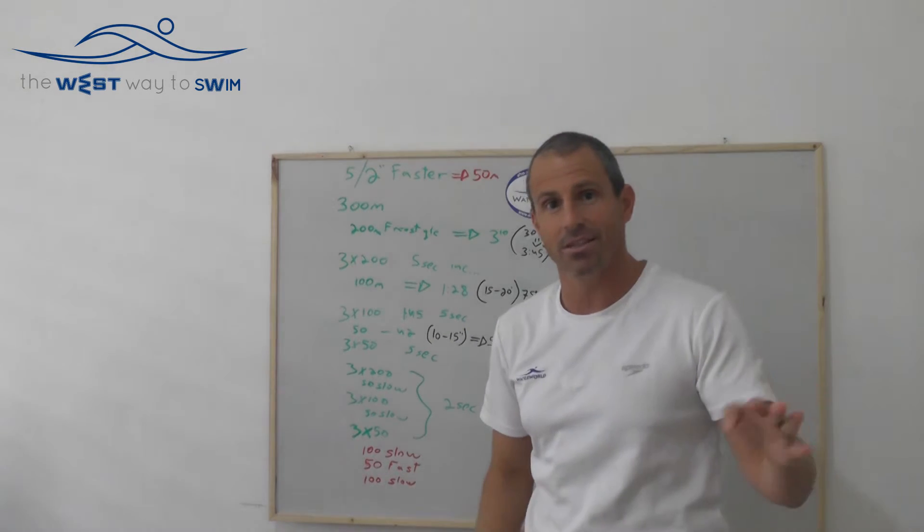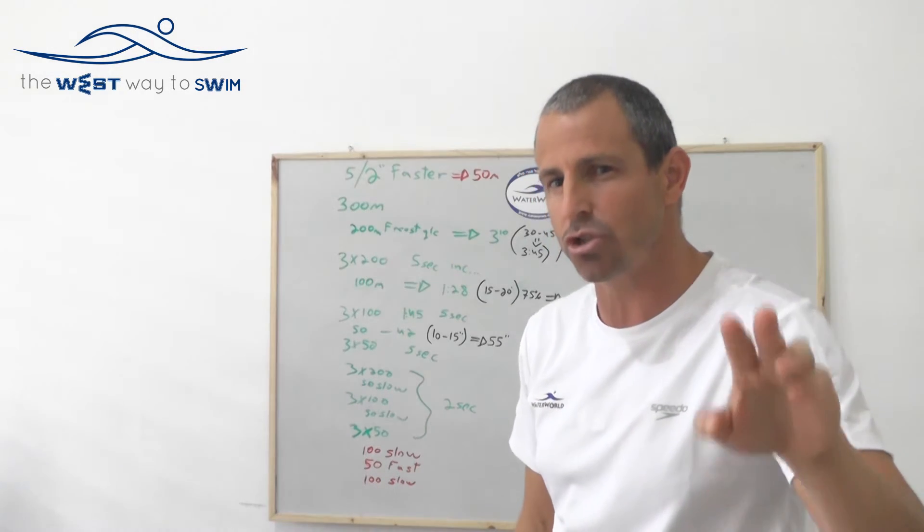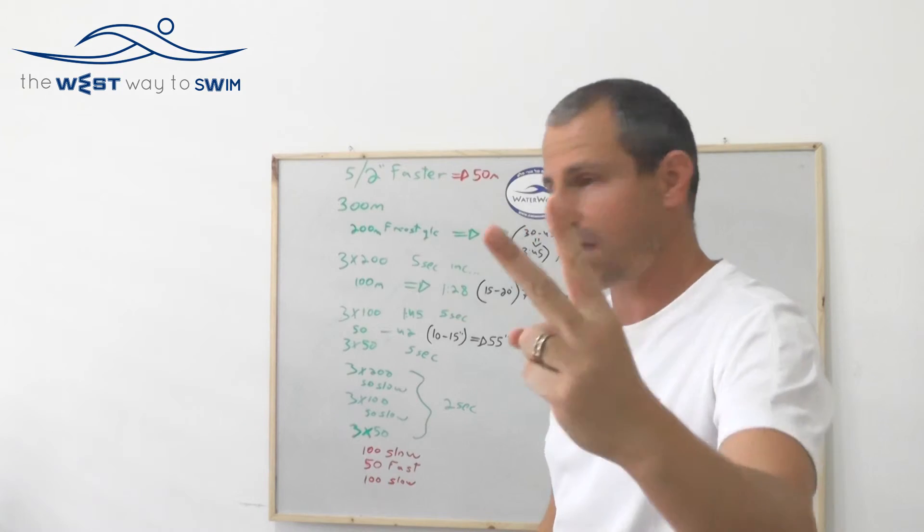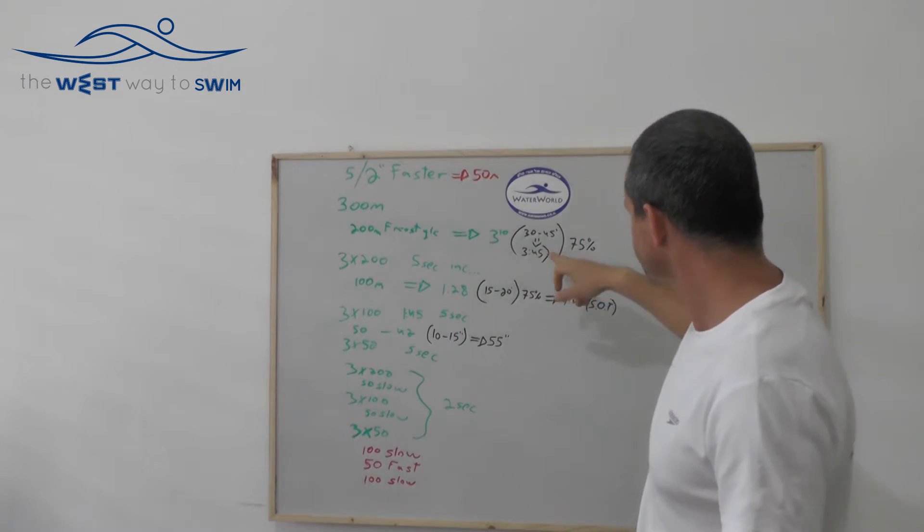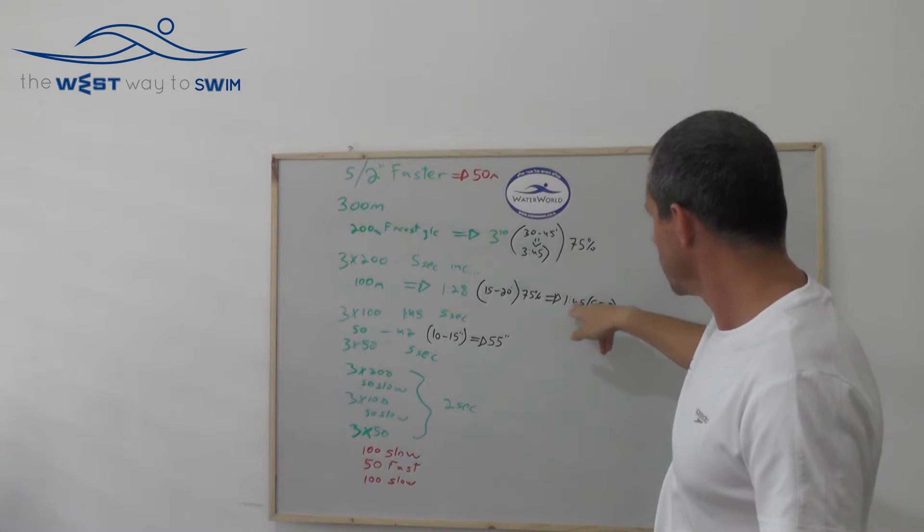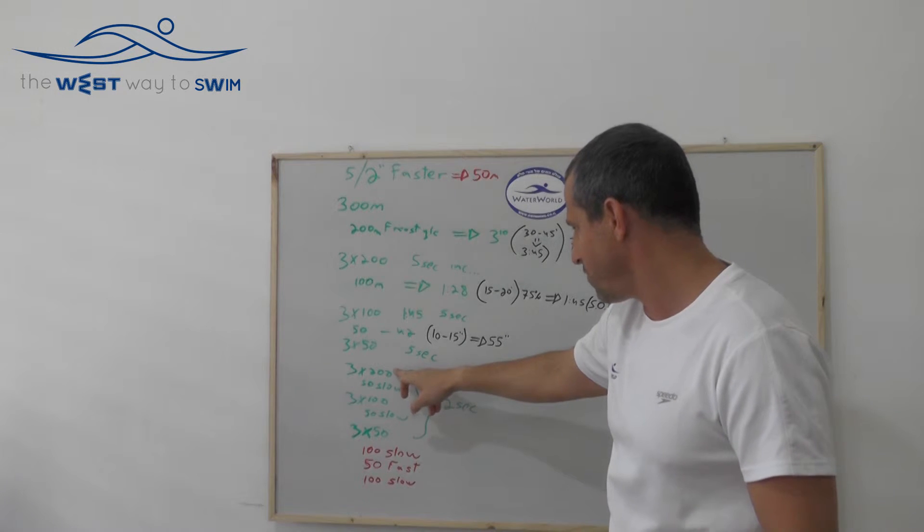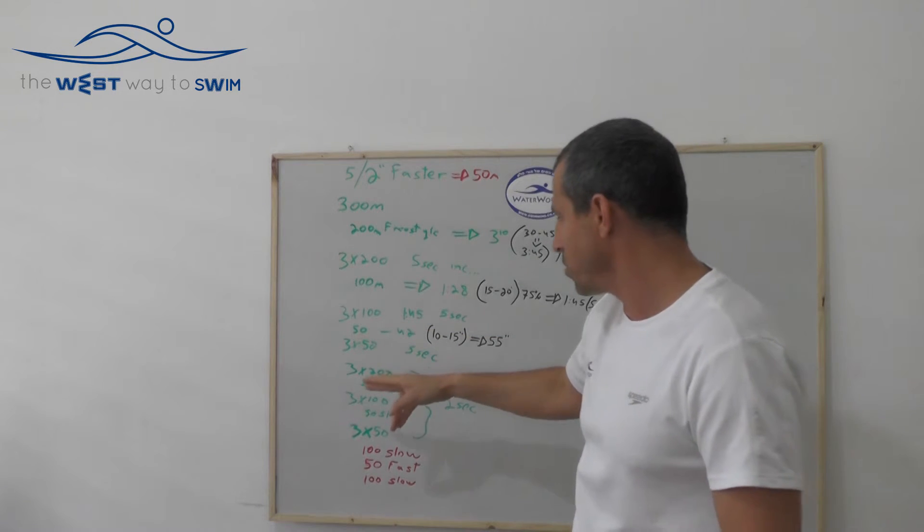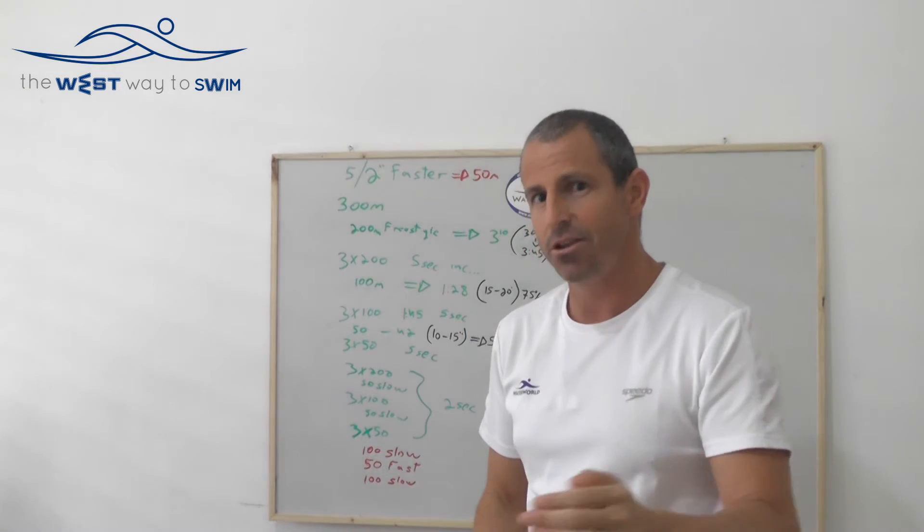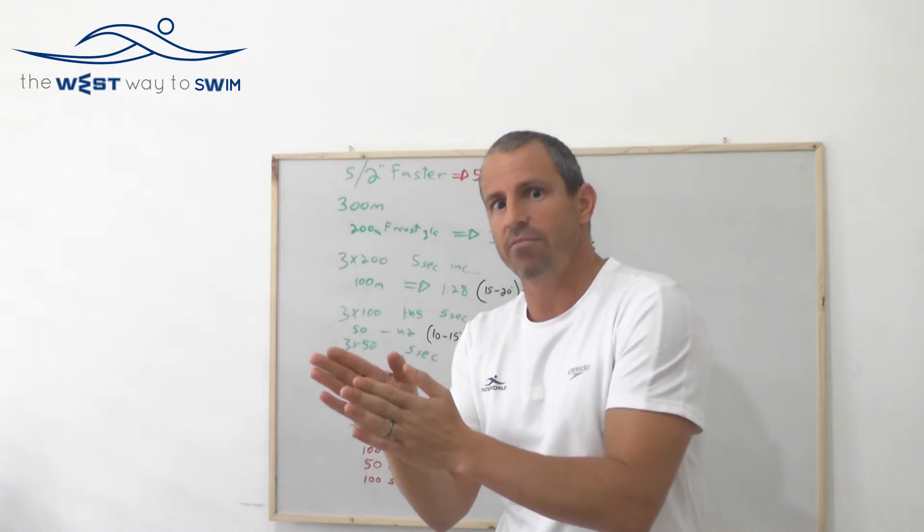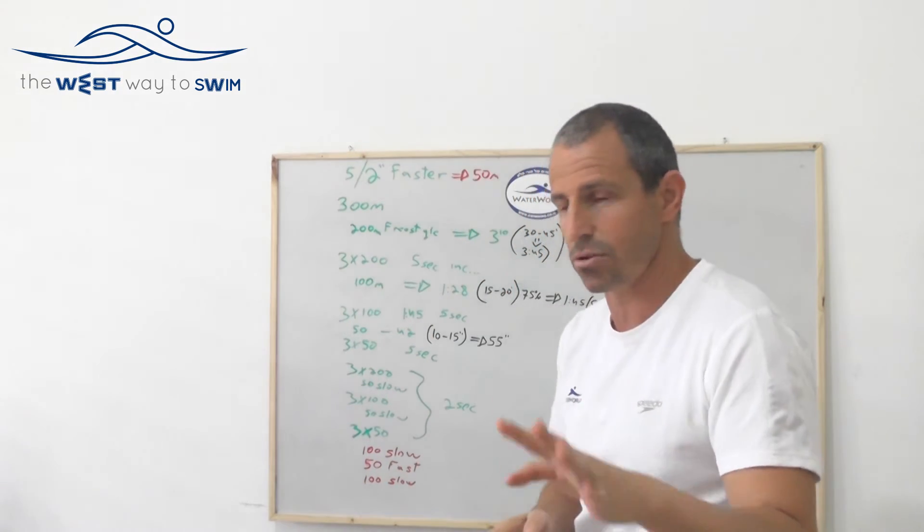And afterwards you're going to do the same thing but it's going to be hard. You have to control the pace with increasing pace of 2 seconds. So the same send off time as before for the 200, for the 100 and for the 50. 3x200 at 3:45 send off time. You're going to try to control increasing pace of 2 seconds. It means you're probably going to start at 75% to 85 or 90%. It's going to be very hard.